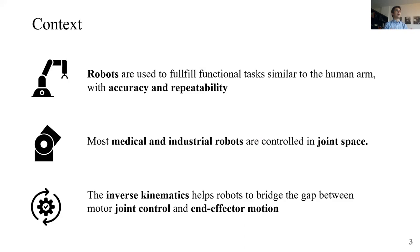Robots and in particular robotic arms have been invented to perform similar functional tasks with higher accuracy and repeatability but they don't have this ability to switch between joint space and task space. That's why we need to solve inverse kinematics problems to bridge the gap between joint control and end effector motion.